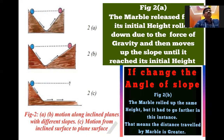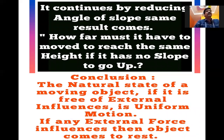The marble released from its initial height rolled down due to the force of gravity, then moves up the slope until it reaches its initial height. If you change the angle of the slope, the marble rolled up to the same height but had to go farther. The distance traveled by the marble is greater. Conclusion: the natural state of a moving object, if it is free of external influences, is uniform motion. If there is no external force, it will continuously move. If any external force influences it, then the object comes to rest.